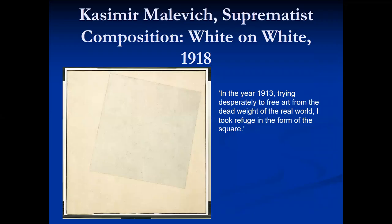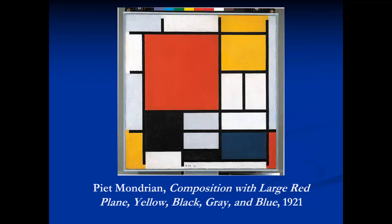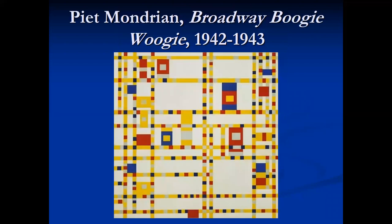Malevich created other suprematist pieces, including White on White in 1918. Piet Mondrian believed in the supremacy of black and white and the straight line. Later works such as Composition with Large Red Plain, Yellow, Black, Gray, and Blue also featured the primary colors — red, blue, and yellow. Primary colors are the colors from which all others can be made. Mondrian's Broadway Boogie Woogie is another example of suprematism, a type of non-objective art. It represents the essence of 1920s New York, capturing the syncopated rhythms of jazz.